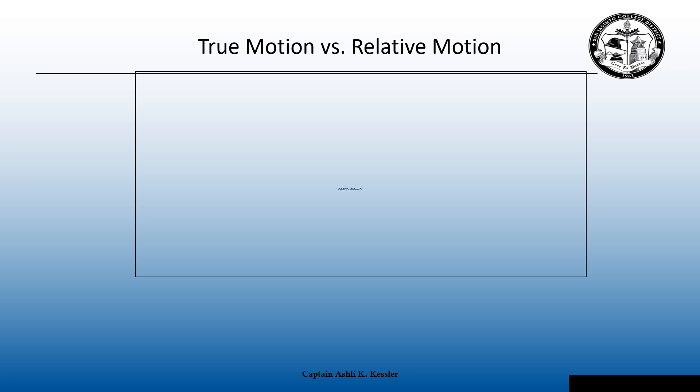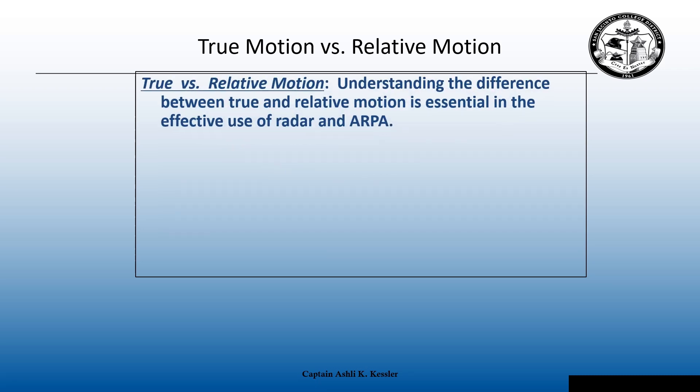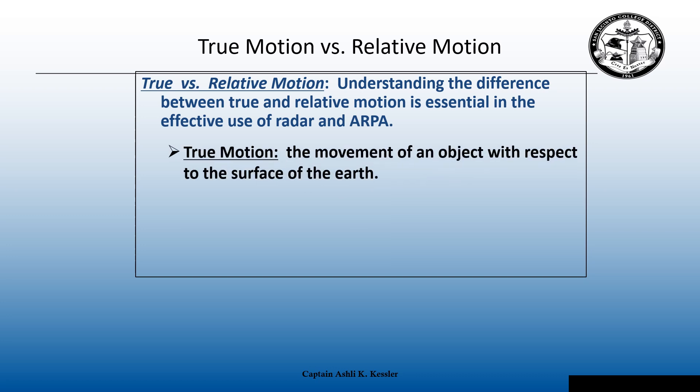True motion is the movement of an object with respect to the surface of the earth. The E to R of the radar triangle — the contact's true course and true speed — is how we are actually traveling across the earth. The E to M of the triangle — the contact's true course and speed — is their true motion, how they are actually moving across the earth.